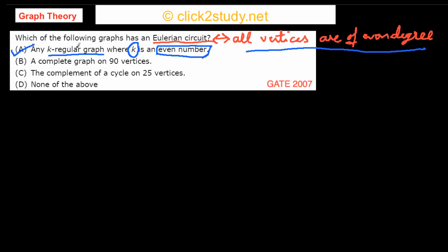We could stop here since in the GATE exam all questions are supposed to have only one correct answer. However, it turns out that in this question, one more option is also correct — option C. I'll explain how.